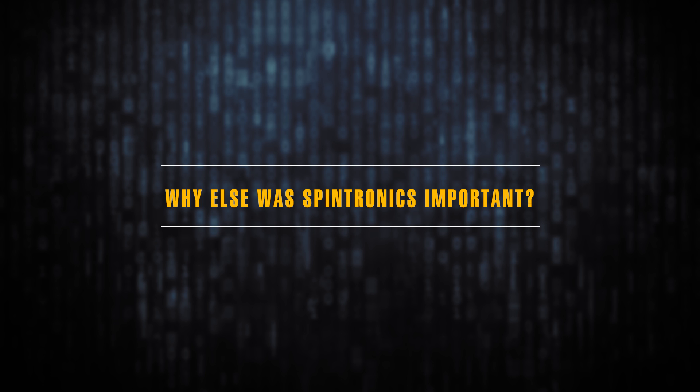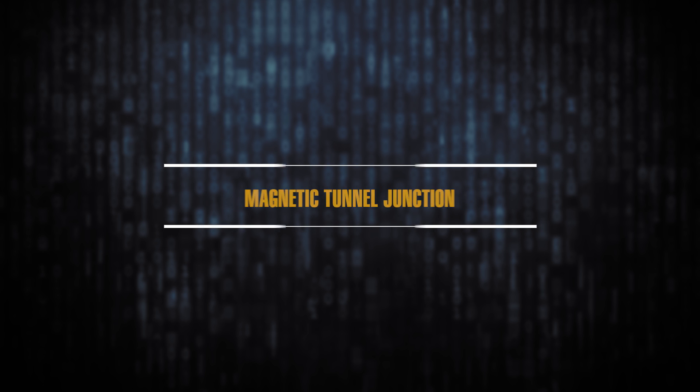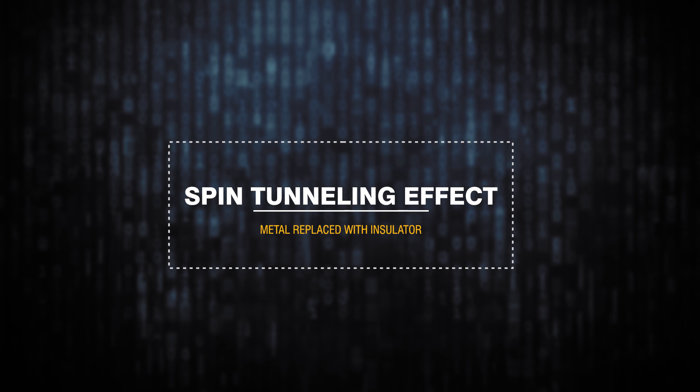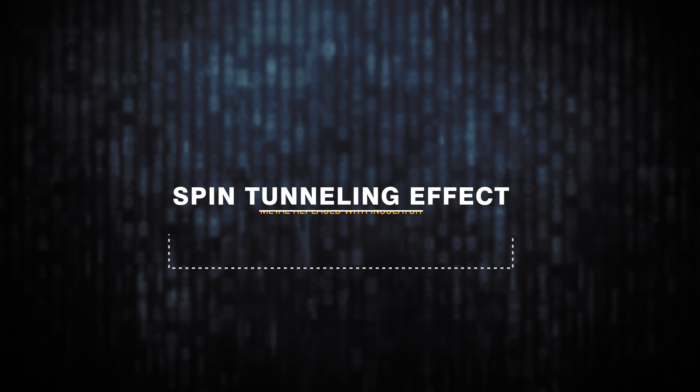There was another major discovery called magnetic tunnel junction, and this really put an impetus in Spintronics because the spin tunneling effect, where the metal is replaced with an insulator, was a much larger effect, in fact by an order of magnitude. So it made the memory much more feasible than using just the GMR.